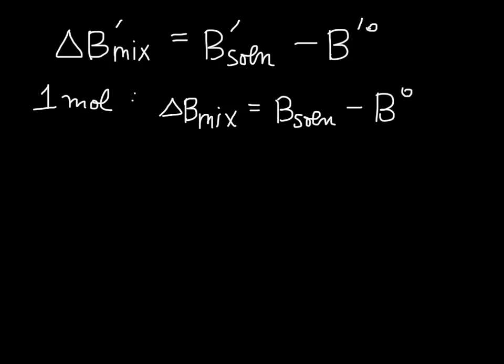What we want to do now is find a way that we can relate the mixing properties or the properties of the solution to the partial molar properties. We want to relate either B of the solution or delta B mixing - and these are, they're not equivalent, but we can find one from the other if we just know the value of B for the components. We want to relate these to the partial molar properties.